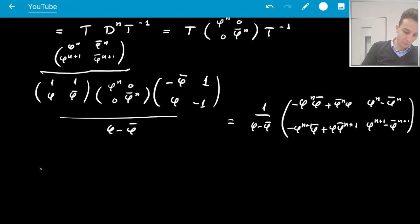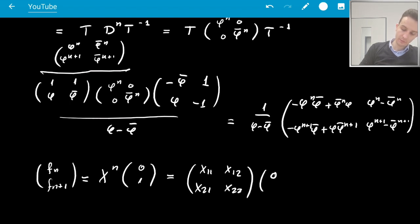And now recall that we have phi n, phi n plus 1 equals x to the n times 0, 1. So we can calculate that, x to the n times 0, 1. In particular, we're interested in what phi n plus 1 is. So perhaps I'll write it like this. This is x1,1, x1,2, x2,1, x2,2, times 0, 1.